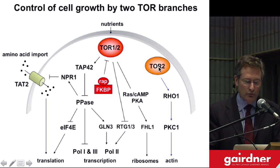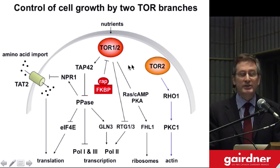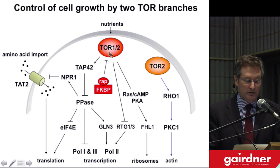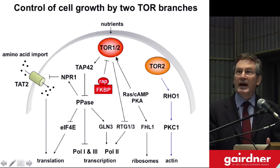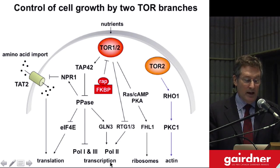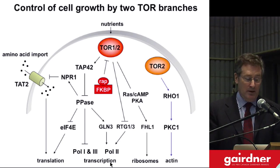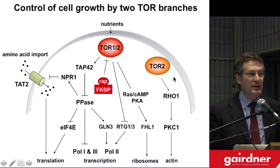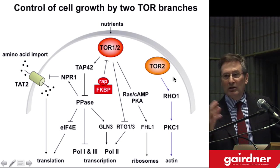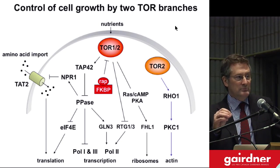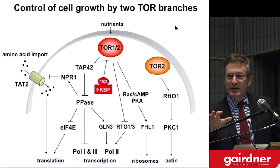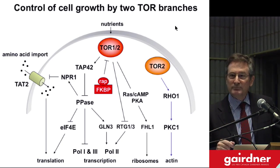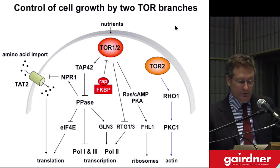The other branch controls processes leading to mass accumulation — we view this as mediating temporal control of cell growth. The logic of having two major branches is to integrate spatial and temporal control of cell growth. Having two TOR genes in yeast helped our analysis: when we knocked out TOR-2 alone, we lost the spatial branch. When we knocked out TOR-1, nothing happened because TOR-2 could maintain the other branch. When we knocked out both, we lost both. Had there been a single TOR, we'd have lost both branches simultaneously and never seen that there were two.